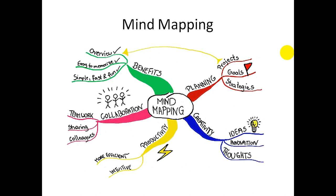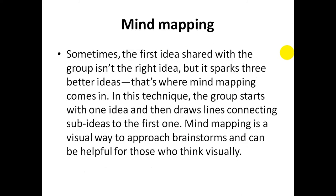Mind mapping is a method with a central point and radiating branches of main and sub-main ideas. Sometimes the first idea shared with the group is not the right idea, but it sparks three better ideas — and that is where the mind map comes in. In this technique, the group starts with one idea and then draws lines connecting sub-ideas to the first one. Mind mapping is a visual way to approach brainstorms and is helpful for those who think visually.